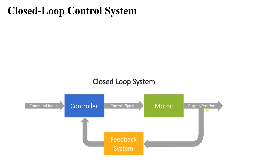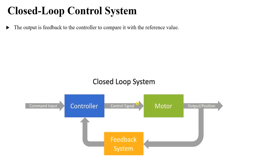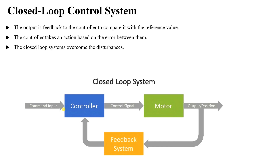To solve this with a closed-loop system for the motor, we take a feedback of the position. If we've reached the desired position, the controller turns off the motor; if not, it keeps the motor on. The output is fed back and compared with the reference command. The controller acts based on the error, which allows it to overcome disturbances like changing load on the conveyor belt.